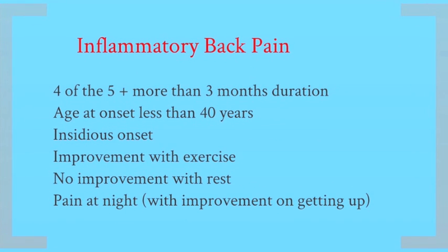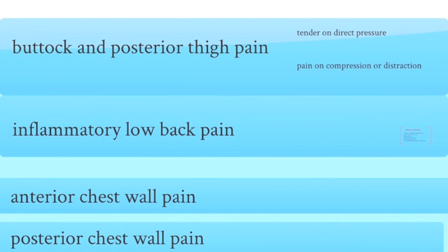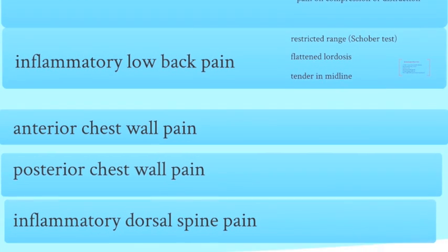Inflammatory back pain is a key feature in spinal involvement. It's usually in patients under the age of 40, it's of insidious onset, it improves with exercise, there's no improvement with rest - and this is in contrast to mechanical pain - and the pain is often worse at night and wakes the patient early in the morning. Signs of involvement of the lumbar spine can include restricted range of movement with a positive Schober test, and this is usually after some period of inflammation, flattened lumbar lordosis, and tenderness in the midline.